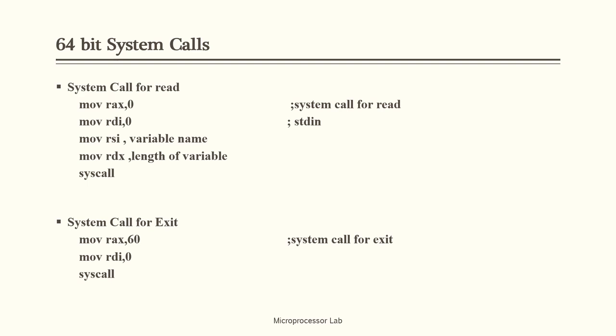Similarly, the system call for reading input from the user uses RAX equal to 0. RAX equal to 0 indicates the system call for read. RDI equal to 0 is the standard input device. Whatever variable we want to accept from the keyboard, we pass it to RSI, and the length of that variable we pass to RDX. These four parameters are required to call the read syscall, and then using the syscall instruction, the input operation is performed and the user can accept a value from the keyboard.